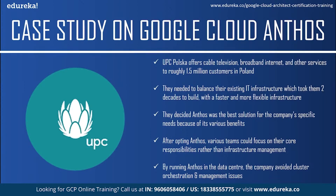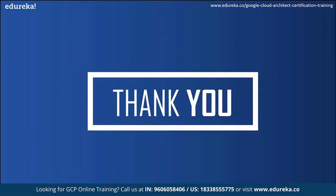They partnered with Accenture and focused on the cultural and organizational elements involved in rolling out a new solution. When they opted for Anthos, various teams could focus on core responsibilities rather than infrastructure management — for example, developers could focus on writing better code while the operational team could use Anthos to effectively manage and run those applications anywhere. The on-premises nature of the company's existing infrastructure had made scaling and general maintenance difficult. By running Anthos in the data centers, the company gained the fully compliant Kubernetes experience necessary to avoid cluster orchestration and management issues, including managing and scaling containers. They also improved scalability and resilience through containerized GKE clusters on Anthos.